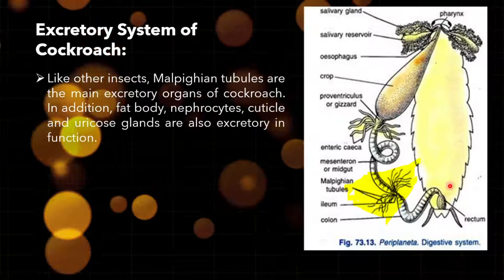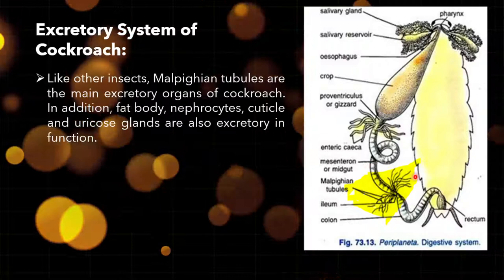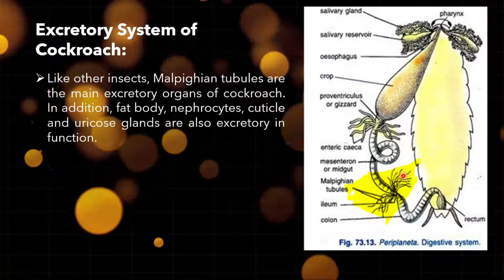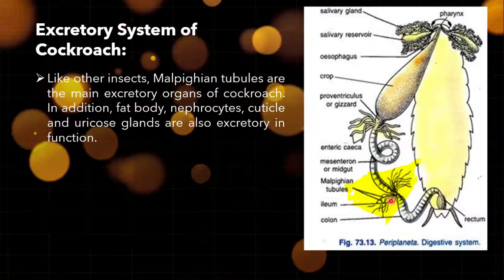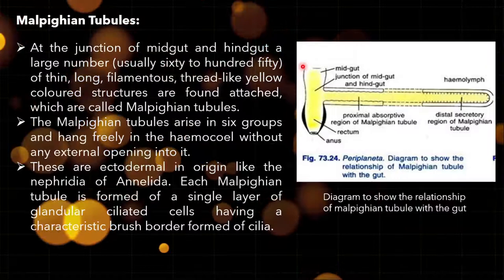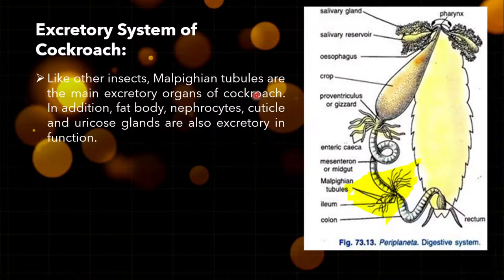This is the complete digestive system diagram that we studied earlier. The highlighted structures are the Malpighian tubules — these fine thread-like structures present at the junction of midgut and hindgut. The bunch of thread-like yellow threads present at that junction are known as Malpighian tubules, which are the excretory organs of cockroach.